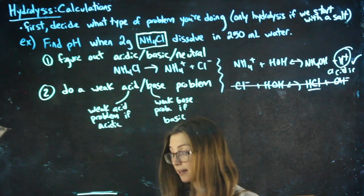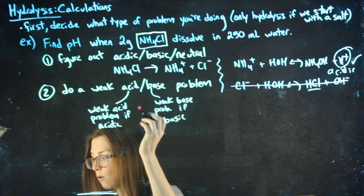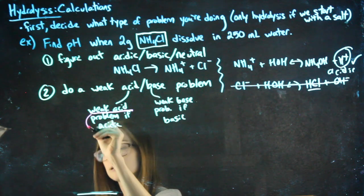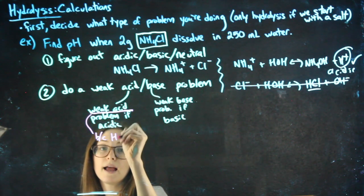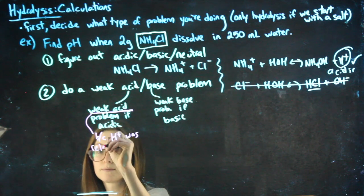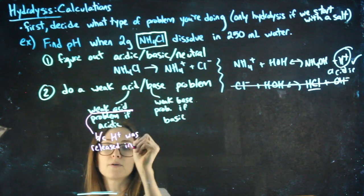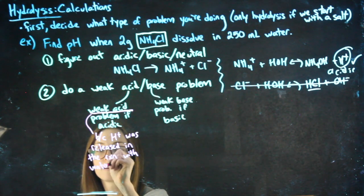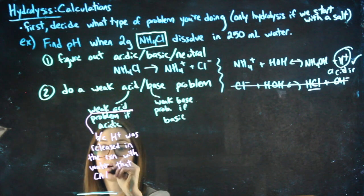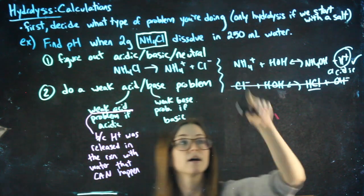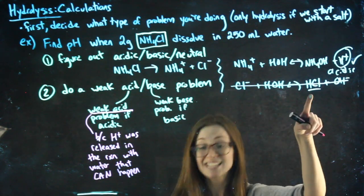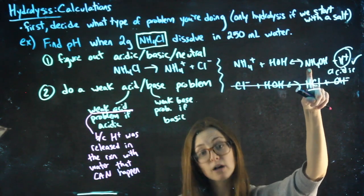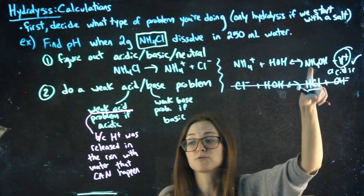A few mistakes that people make that I'll try to clarify up front. When we say a weak acid, again, it's a weak acid because H+ was released in the reaction with water that can happen, right? This reaction with water can't happen because it produces something strong which is never going to stick together. This reaction doesn't produce something strong, so it produces something that can stick together. This reaction can happen.